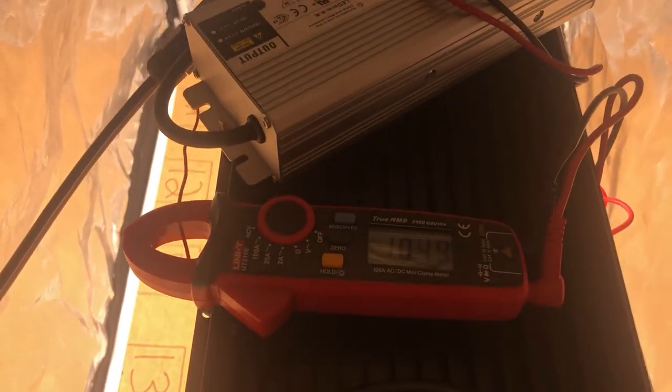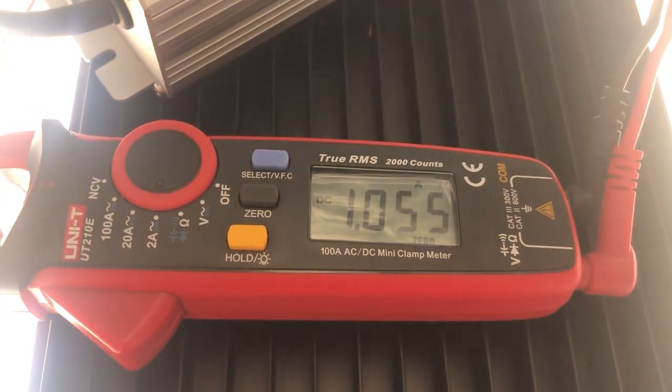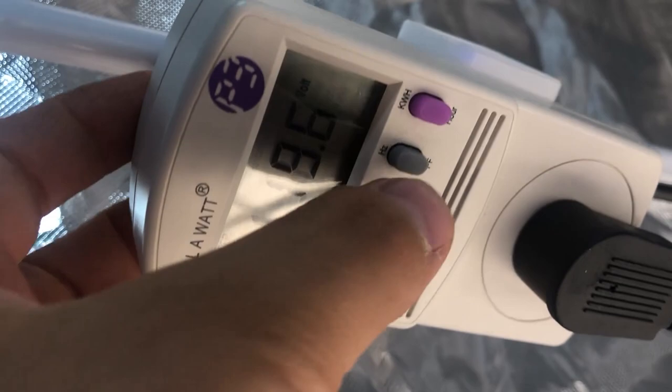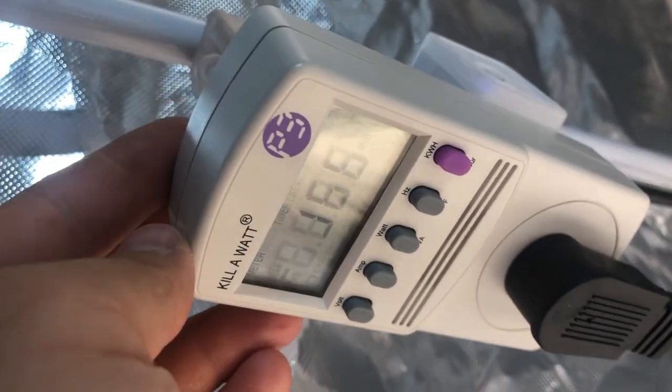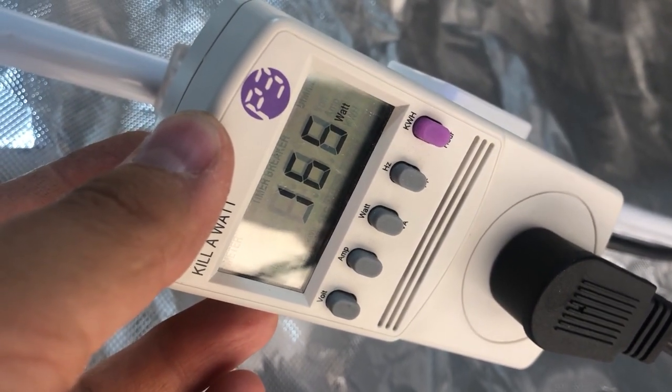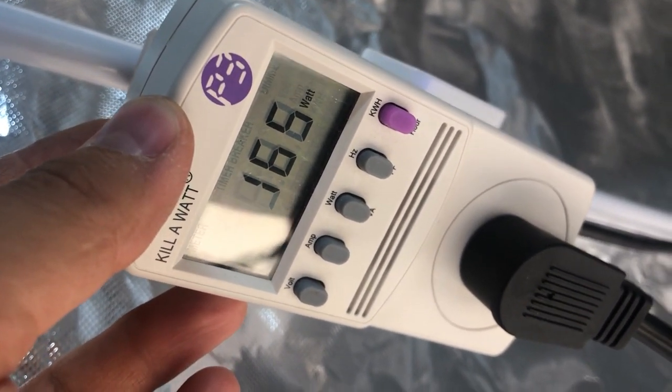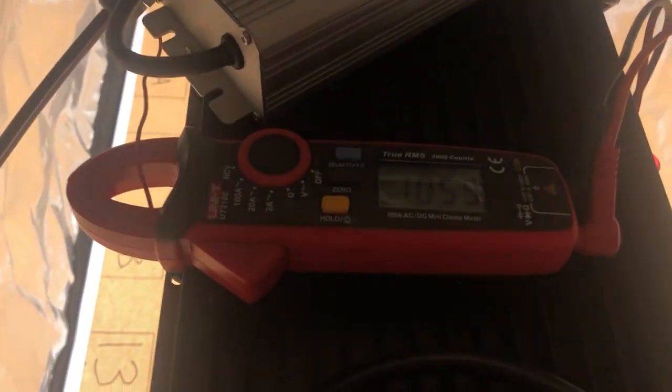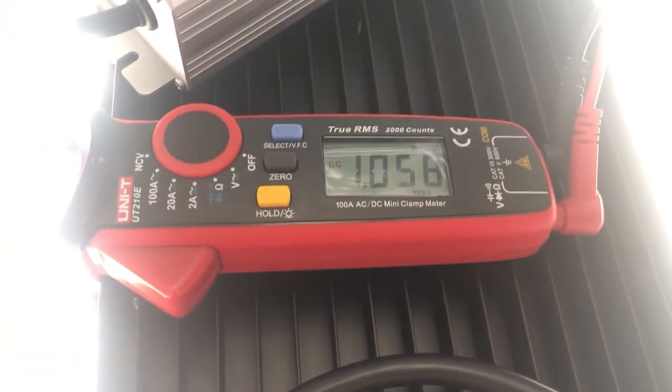Just for fun, I did try dimming the 320 watt kit down to 1050 milliamps, which is just about half power for that driver. And at this current level, the kilowatt was reading only 165 watts being drawn, and I was still averaging over 500 micromoles across the entire 2x4 space at 18 inches. So if you want to run this thing soft and really max out your efficiency, there are some major gains to be had with this unit.